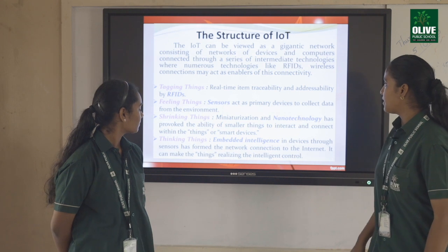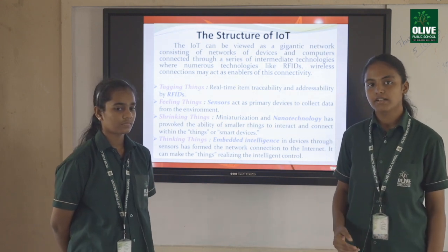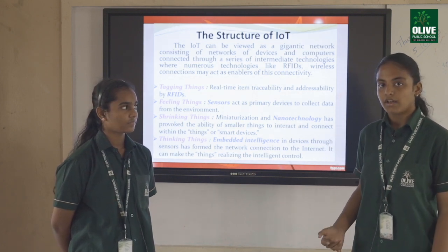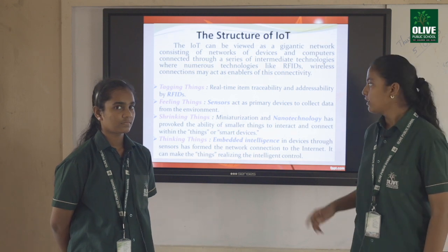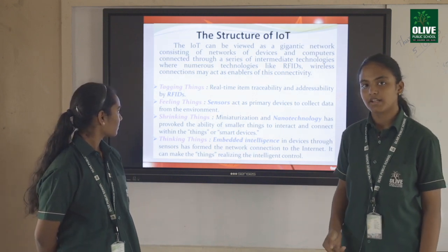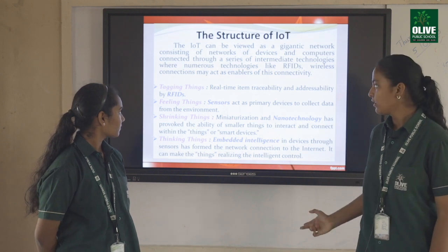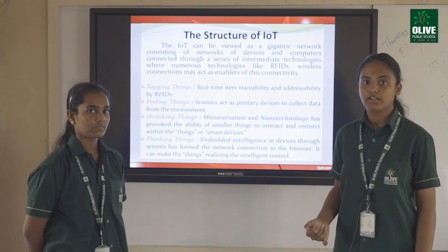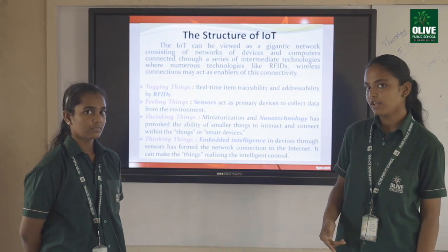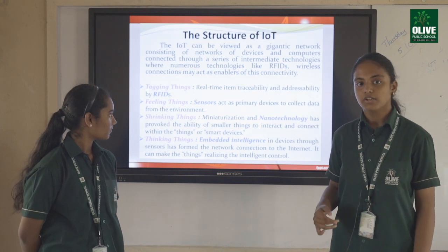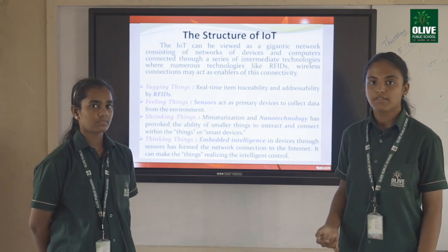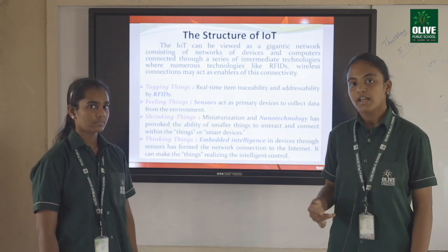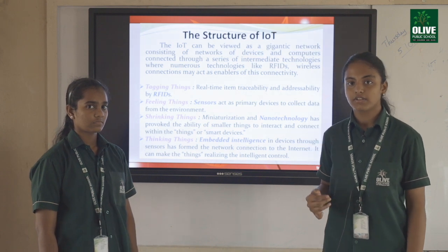The structure of IoT. IoT can be viewed as a gigantic network consisting of many smaller networks and other technologies. A few features noticed are: tagging of things, where real item traceability and addressability is used; feeling things, where sensors act as a primary device to connect the internet with the world; shrinking things, where nanotechnology helps smaller technologies to interact within the world by smart devices; and thinking things, where embedded intelligence in devices helps the network technologies connect with the internet.